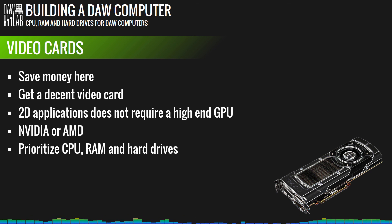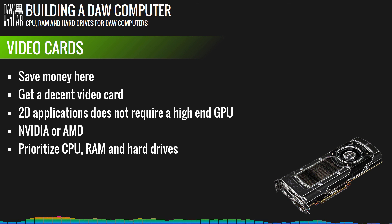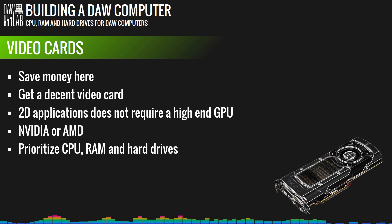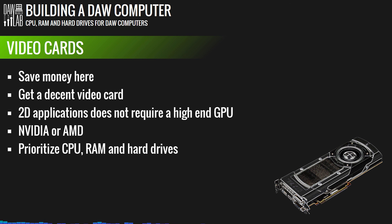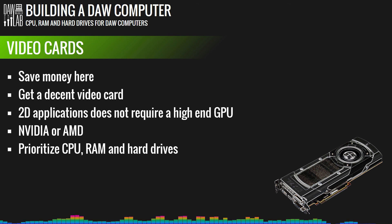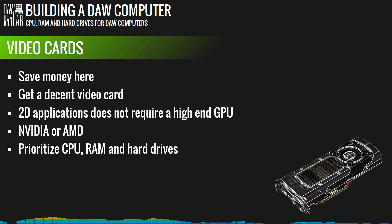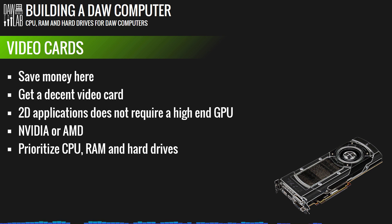At the end of the day, the most important parts of your computer are the CPU, the RAM, and the hard drive. The motherboard and video card do matter to a certain extent, but prioritize those three first. If you have any questions or comments, leave them below and I'll try to reply. Thanks for watching, and I'll see you next time.